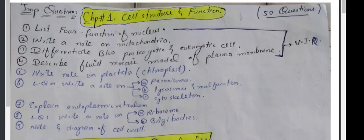List four functions of nucleus. Write a note on mitochondria. Differentiate between prokaryotes and eukaryotes. Describe fluid mosaic model of plasma membrane. Write note on plastids, chloroplast specifically. Long question here: write a note on peroxisomes, lysosomes and malfunction.